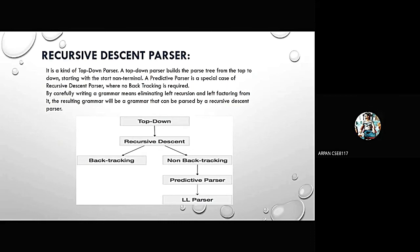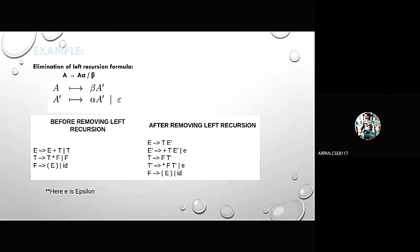As we know, recursive descent parser is a type of top-down parser and recursive descent parser can be implemented in two ways, that is backtracking and non-backtracking. Now, over to Krishna to explain the next slide. Krishna, please present.